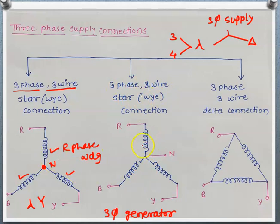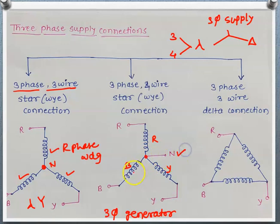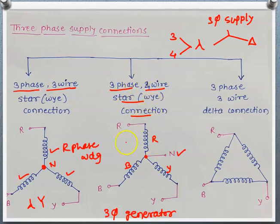Now the three-phase four-wire star connection has a similar connection: R-phase winding, Y-phase winding, and B-phase winding, with a common neutral point where one terminal of all windings is joined. When this neutral is also taken out along with R, Y, B, it is known as three-phase four-wire star connection — we have four wires: R, Y, B, and N.